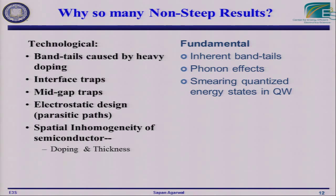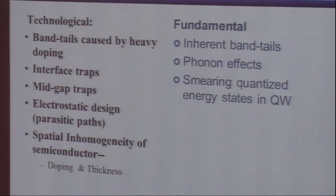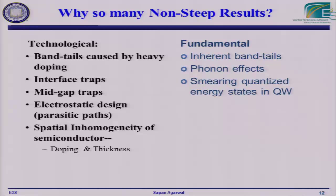There are many issues causing these problems. In addition to band tails from heavy doping, you often suffer from interface traps, mid-gap traps, and poor electrostatic design — leakage paths that prevent you from seeing the sharp regions. Another major issue is spatial inhomogeneity: if you build a large device with thickness fluctuations or heterojunction fluctuations, any variation smears out the turn-on. There are also fundamental issues: phonons at room temperature cause inherent band tails, and if you have a sharp band edge it will be quantum mechanically broadened when it couples to the contacts.